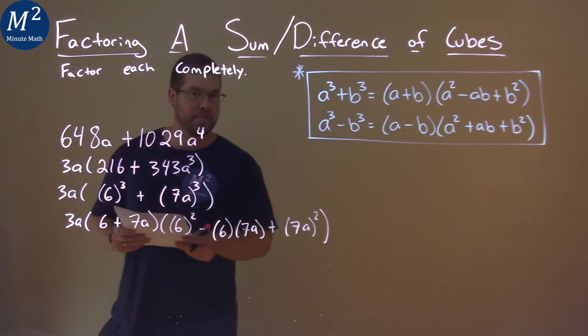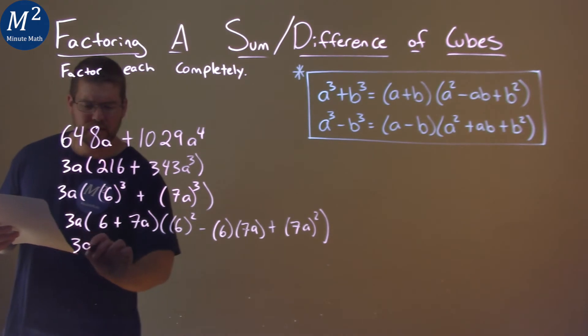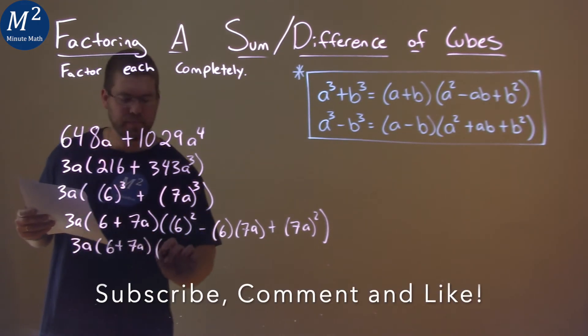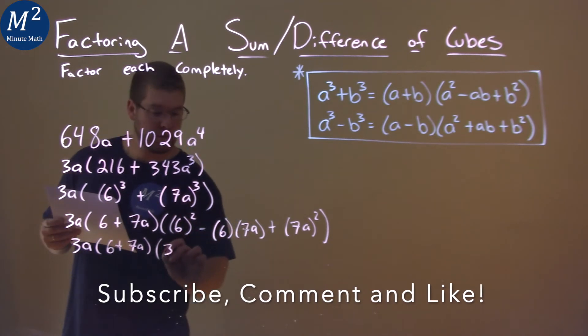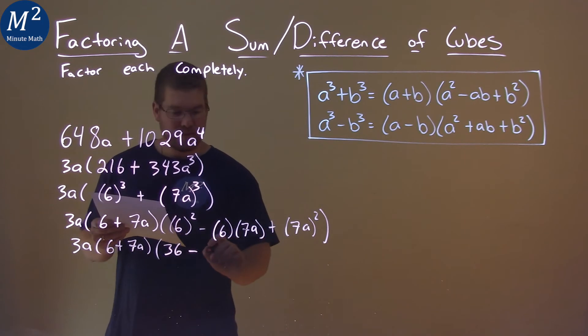That's a lot there. Alright, so let's keep breaking it down. 3a stays here. 6 plus 7a can't really simplify. Now 6 squared is 36. 6 times 7 gives us 42.